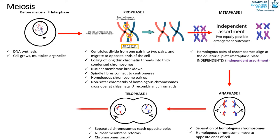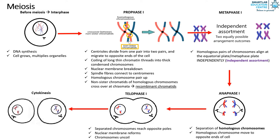Once telophase 1 is complete, cytokinesis occurs. The splitting of the cytoplasm into two causes two daughter cells that are haploid to be formed. However, this is not the end of meiosis. Meiosis produces four genetically different daughter cells, so these two daughter cells must further split into two again.